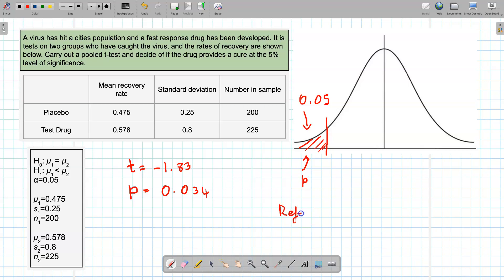So in this one, conclusion is reject H0. And if I want to write all that out, that would mean that at 5 percent level of significance, the test drug is better.